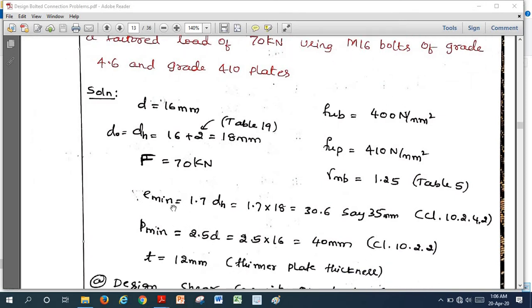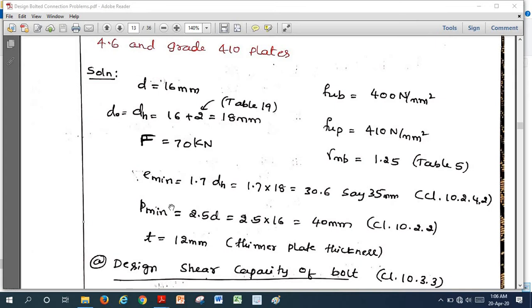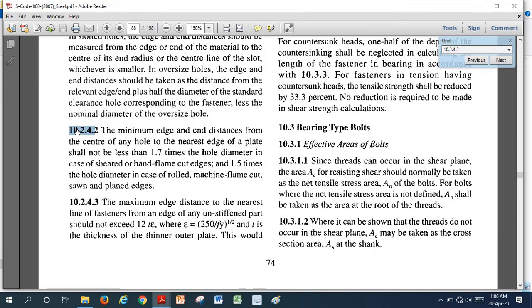Now since they don't mention anything about edge and pitch distance, we should calculate according to the code. The minimum end distance we should provide is 1.7 times dh. If you look into code 10.2.4.2, the minimum end or edge distance from the center of the hole to the nearest edge of the plate shall not be less than 1.7 times the hole diameter in case of sheared or flame cut edge, and 1.5 times in case of machine flame cut edge.